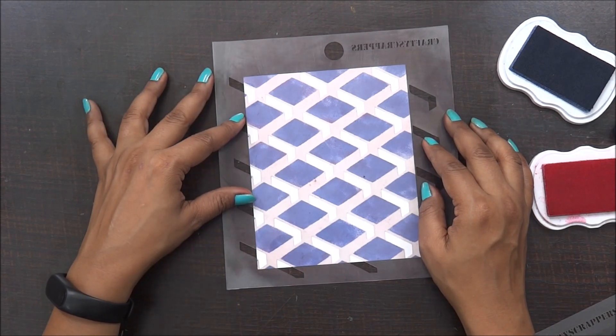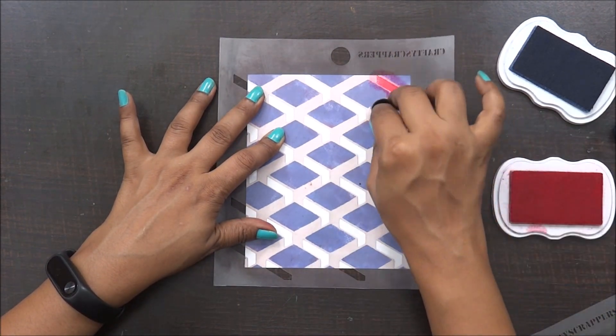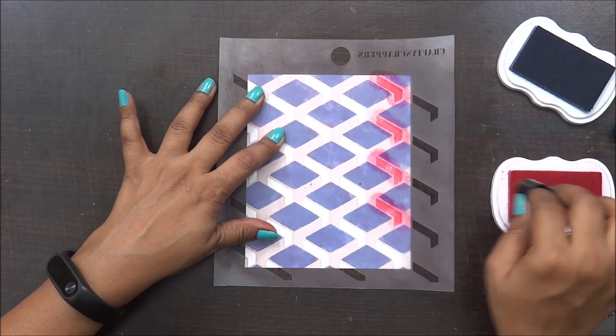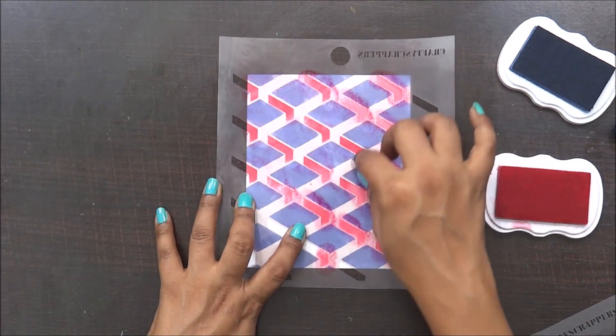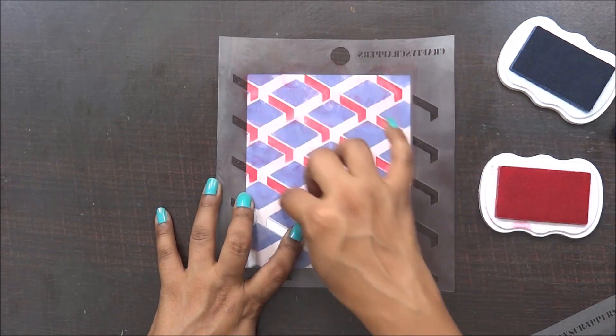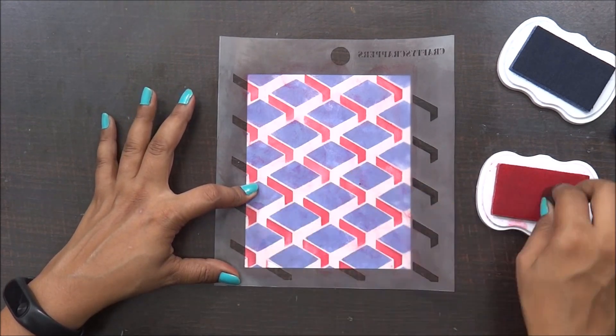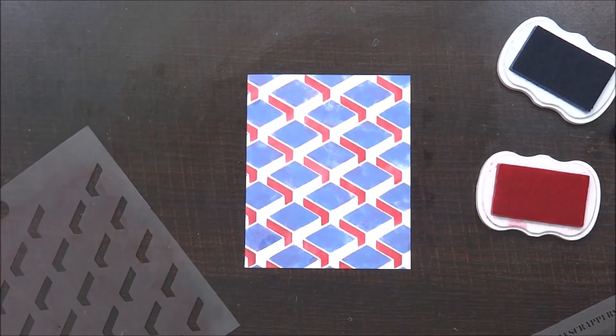Now once my first pattern is done, I'm going to use my other stencil, align it with the lines, and start working with another shade. With layered stencils, it's always suggested to use different variations of colors so that your layering and coloring is prominent and you can see the design.